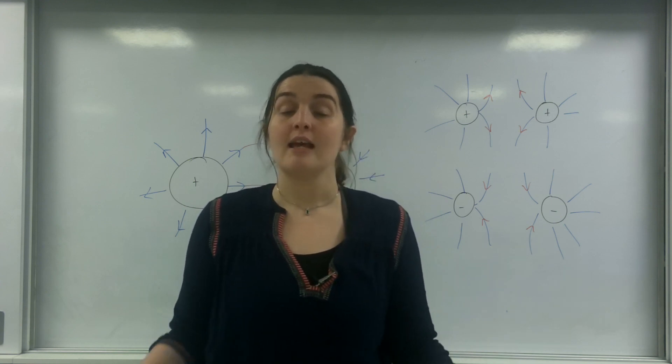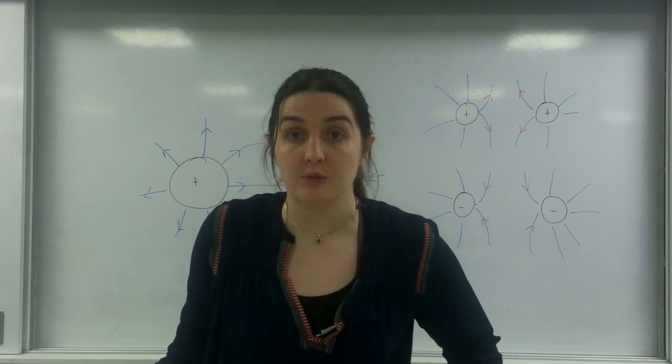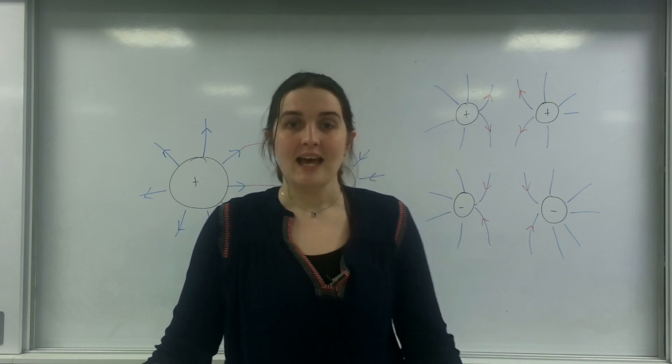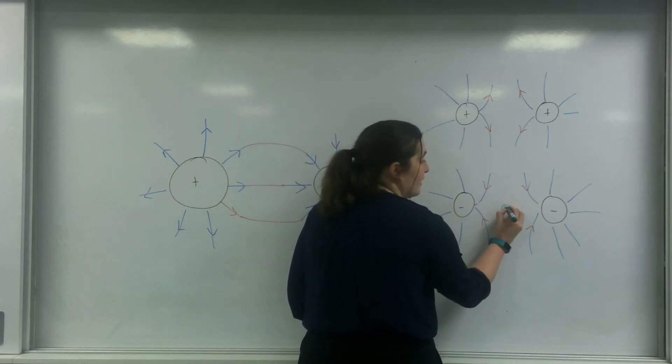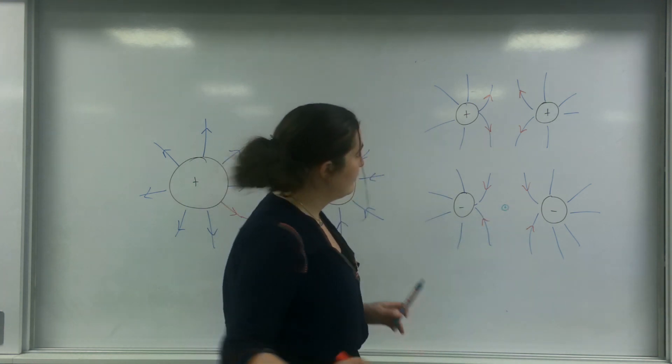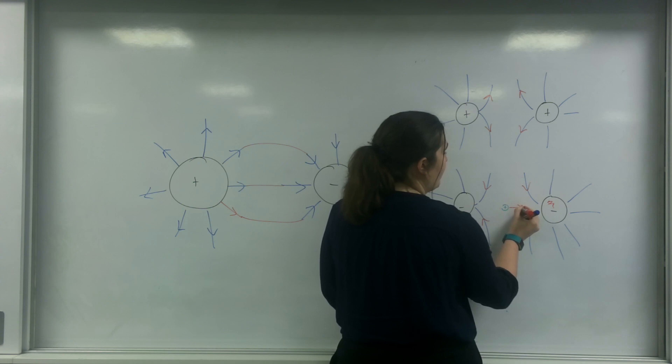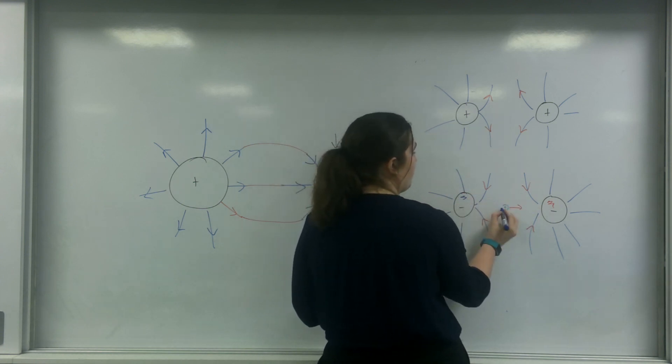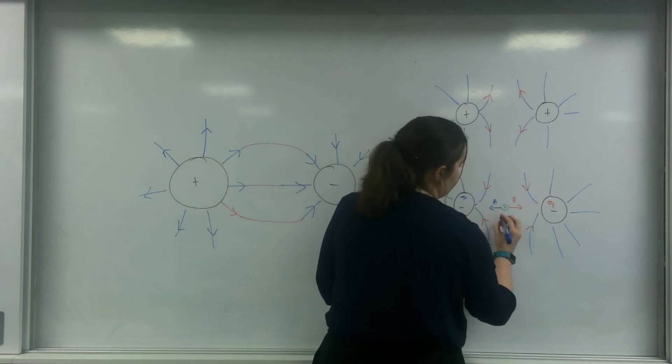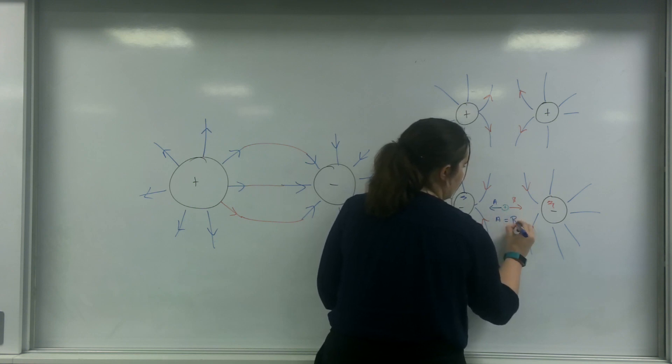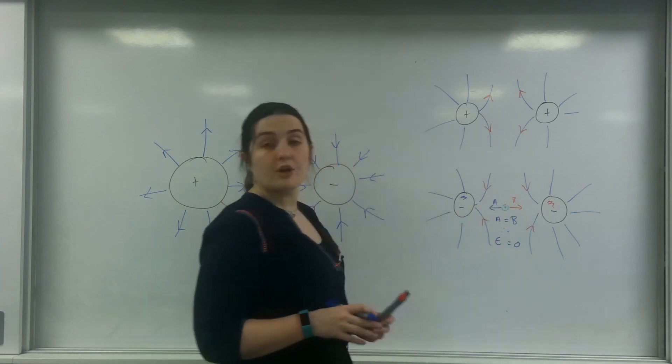And because field strength is the resultant force the object feels divided by the charge, if there is zero resultant force, there is zero resultant field. And that is this point here. So this point here is the point where, if I put my positive test charge, it's going to be attracted this way by this one and attracted this way by this one by the same amount. So A and B, A equals B. Therefore, the electric field strength is zero, which is why there is no field there.